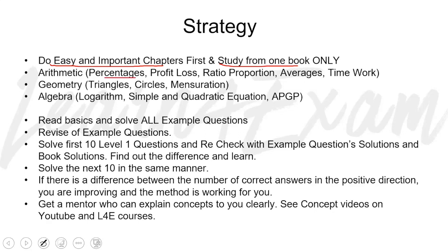The easy and important chapters are: percentages, profit and loss, ratio, proportion, variation, averages, and time and work from the arithmetic section. From geometry, focus on triangles, circles, and mensuration. Arithmetic will generally be easy while permutation and combination, number system, and geometry fall in the difficult level.